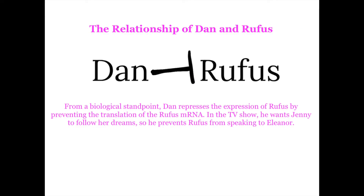Dan prevents Rufus from communicating with Eleanor. From a genetic standpoint, Dan will prevent the transcription of the Rufus mRNA, therefore preventing Rufus from being expressed. Dan is considered a repressor because his gene acts to inhibit the action of the Rufus gene.